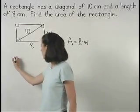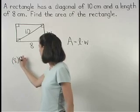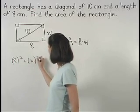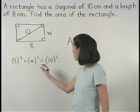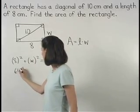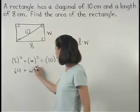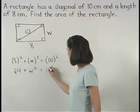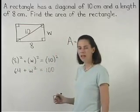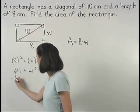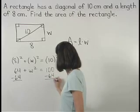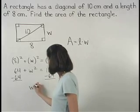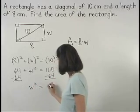So we have 8 squared plus W squared equals 10 squared. Or 64 plus W squared equals 100. And subtracting 64 from both sides gives us W squared equals 36.